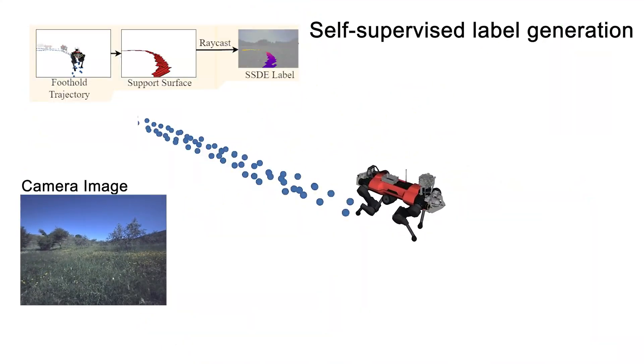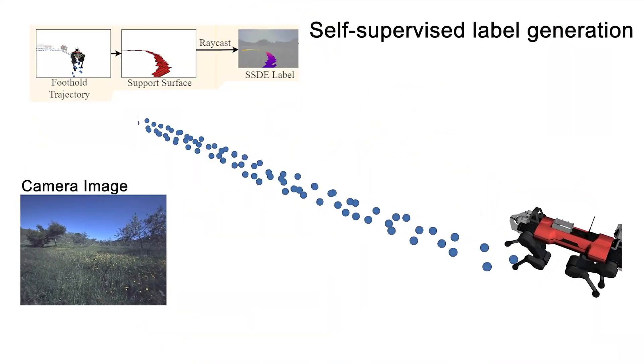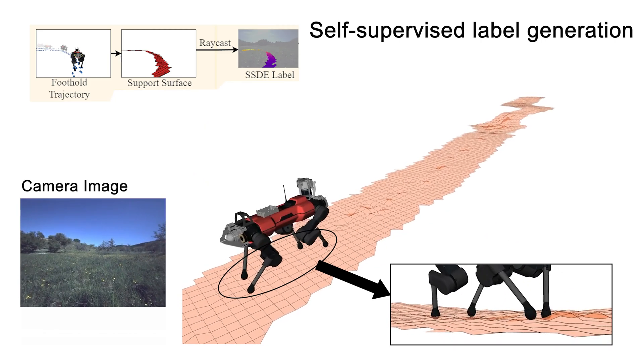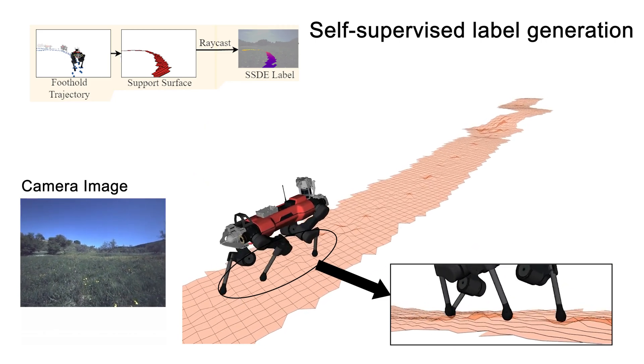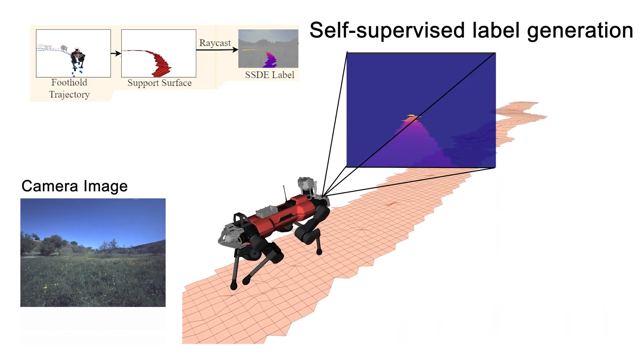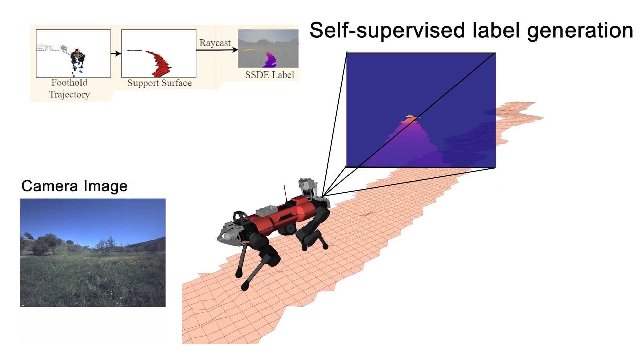We label the training data for the neural network in a self-supervised manner by fitting a Gaussian process on the past footholds of the robot. The reconstructed surface is used as the ground truth of the support surface. We then project it into the camera frame to generate the label for depth estimation.